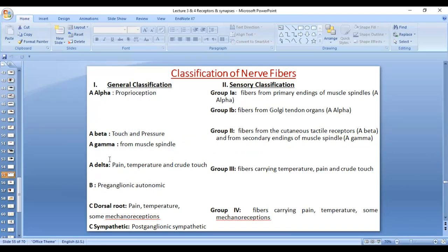A-alpha responsible for proprioception, A-beta for touch and pressure, A-gamma, the fibers come from muscle spindle, and A-delta for fast pain and fast temperature and crude touch. C fibers for slow pain, temperature and for some of the mechanoreceptors. You can see that for touch, there is fine touch by A-beta and there is crude touch by A-delta. The sensory classification is the same, it's just the categories are different.